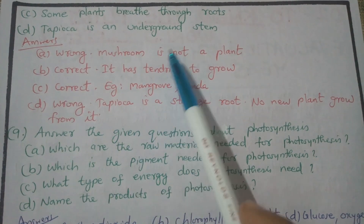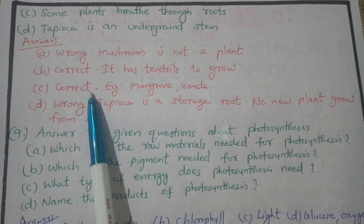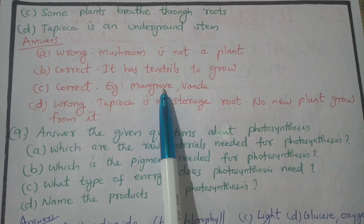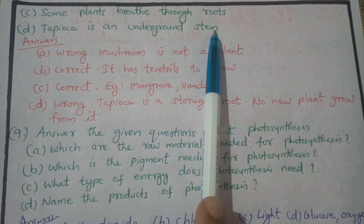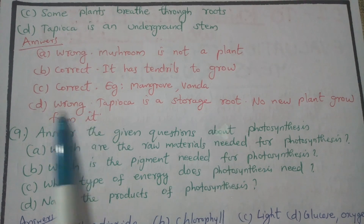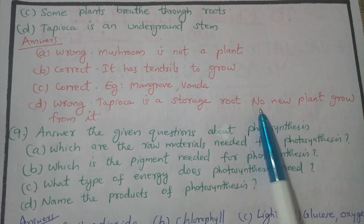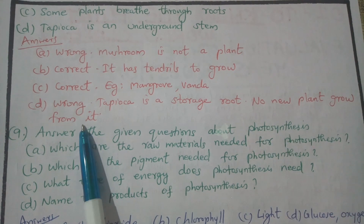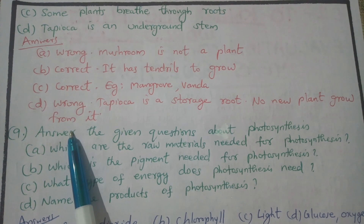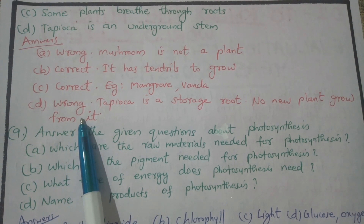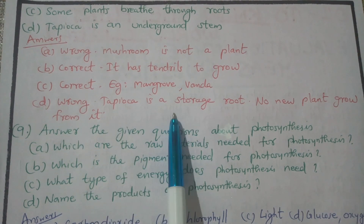Statement 3 is correct — some plants do breathe through roots. Statement 4 is wrong — tapioca is a storage root, not an underground stem, because no new plant can grow from it. Tapioca is a storage root.